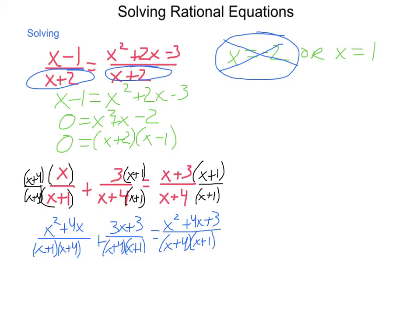Now since our denominators are all the same, I'm going to ignore them and start combining like terms in my numerators on the left hand side. So what that works out to be is x²+7x+3 = x²+4x+3.